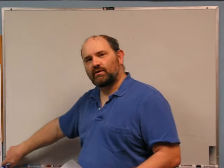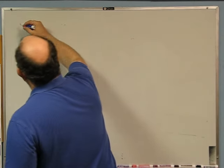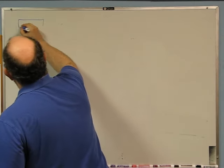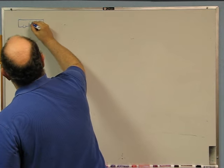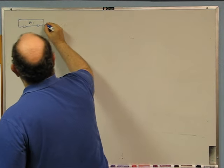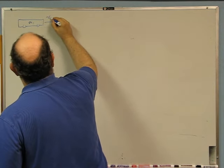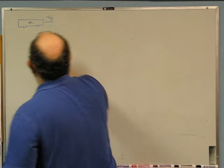As per request, I'm going to work out the problem that we did in the lab, which is a cart of mass m1 comes in with speed v_i1. So here is a cart of mass m1 coming in with speed v_i1.